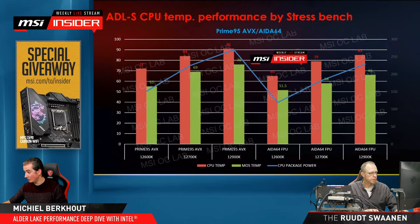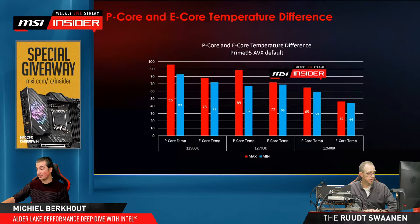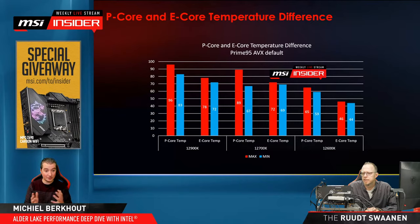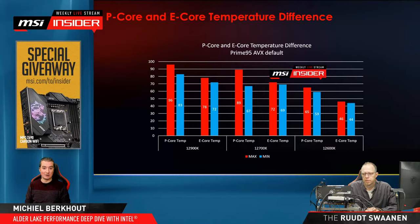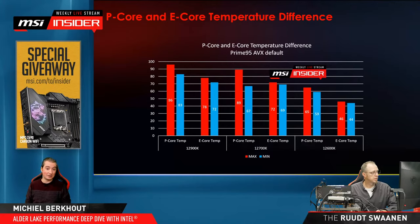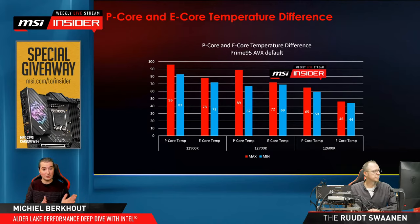We discussed the iGPU and temperatures. Now let's look at temperatures between P-cores and E-cores. The power draw of a performance core is higher than an efficient core, so P-cores run a bit hotter than E-cores under full load. In Prime95 AVX — a very extreme workload — both P-cores and E-cores are under full load, but P-cores definitely run hotter. You also see the difference in thermal behavior between the i9, i7, and i5.